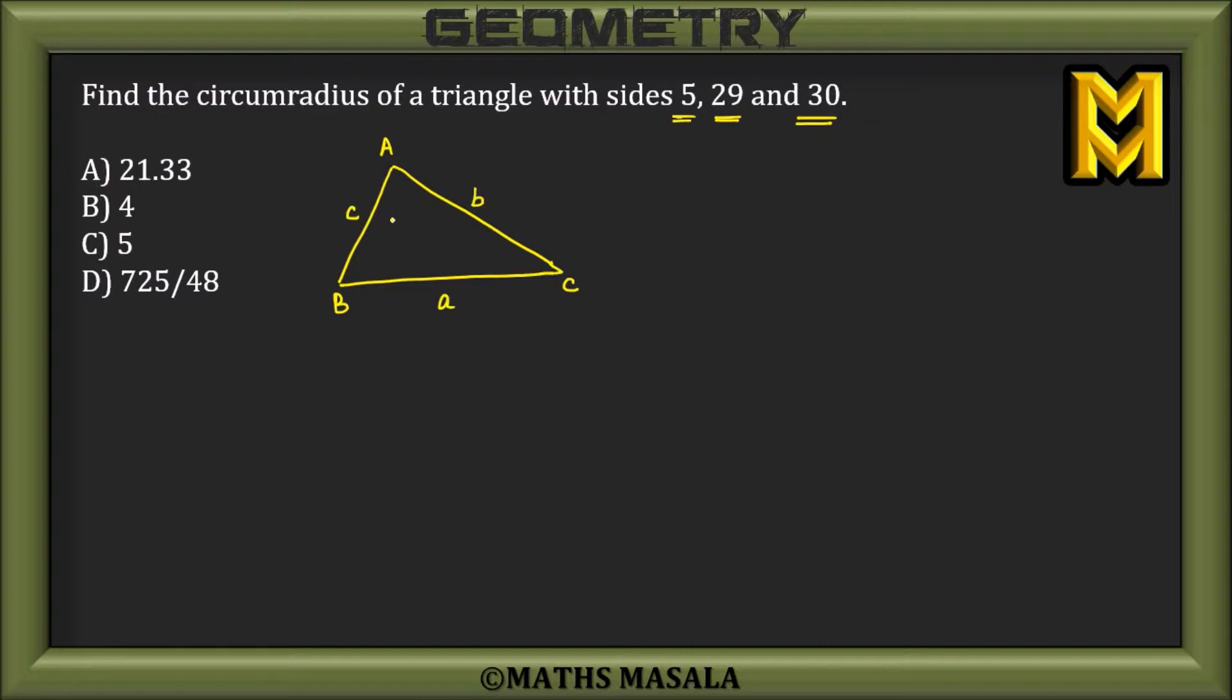Intentionally, I have taken the length of the side opposite to vertex A as small a, opposite to vertex B as small b, and opposite to vertex C as small c—just this notation. Now, if I try